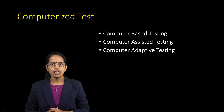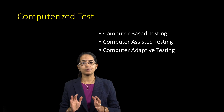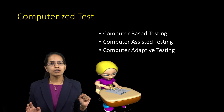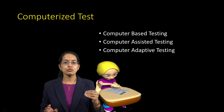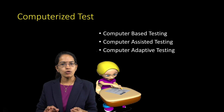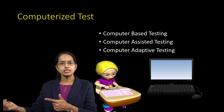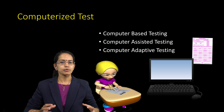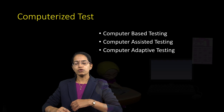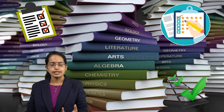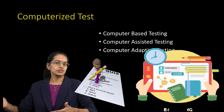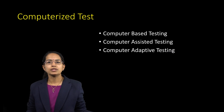Let's begin with the first concept: the difference between a computer-based test, a computer-assisted test, and a computer-adaptive test. A computer-assisted test is what you were doing so far — writing, solving questions, and filling up the OMR sheet, which was then evaluated through the computer. The assistance of the computer was required, hence the name. It can be used for coursework, small assessments, assignments, e-learning, or standardized tests.